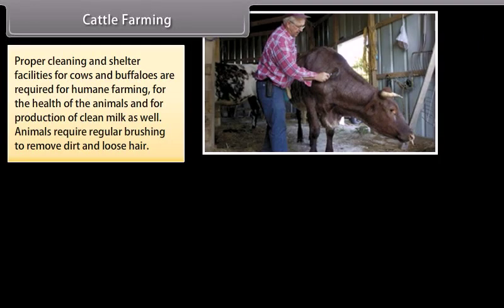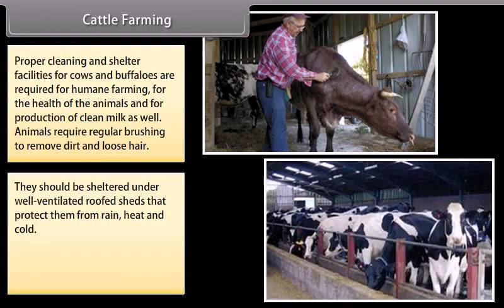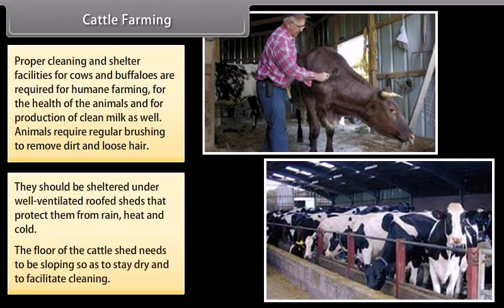Proper cleaning and shelter facilities for cows and buffaloes are required for humane farming, for the health of the animals, and for production of clean milk. Animals require regular brushing to remove dirt and loose hair. They should be sheltered under well-ventilated roofed sheds that protect them from rain, heat and cold. The floor of the cattle shed needs to be sloping so as to stay dry and to facilitate cleaning.